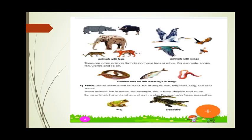Next comes place — where animals live. Some animals live on land, for example lion, elephant, dog, and cat. Some animals live in water, for example fish, whale, and dolphin. And some animals live on land as well as in water, for example frogs, crocodiles, and tortoise.